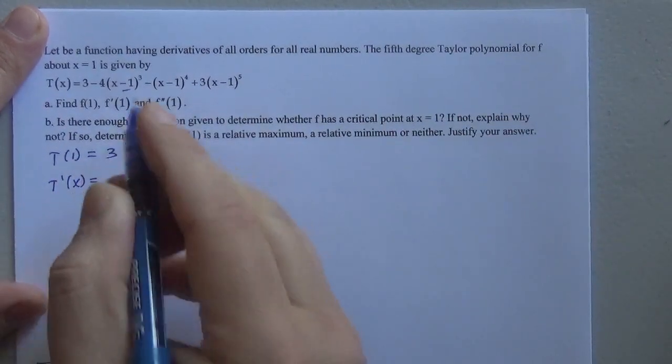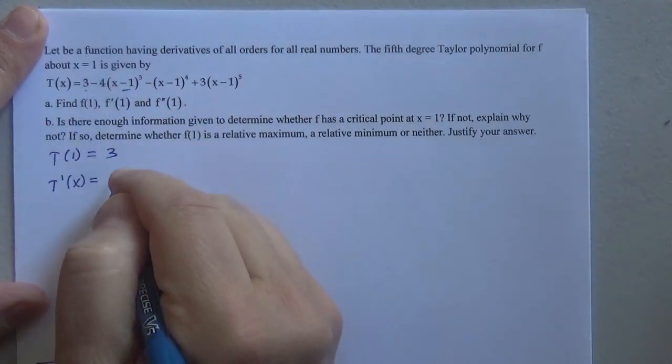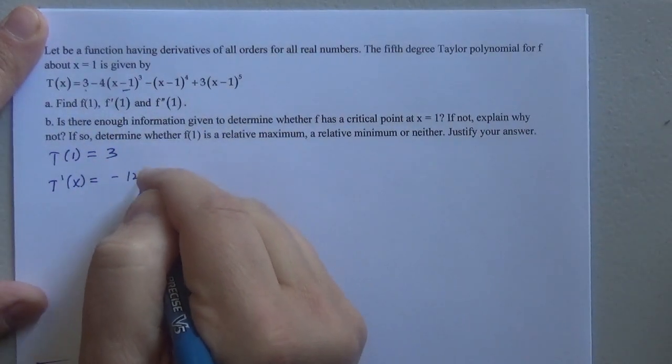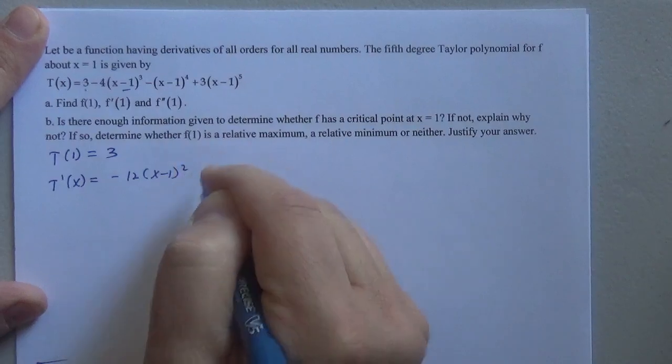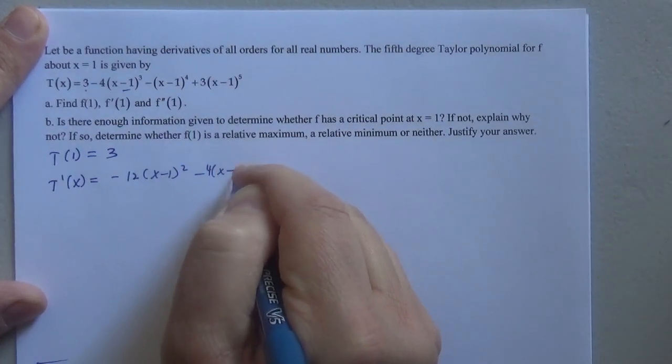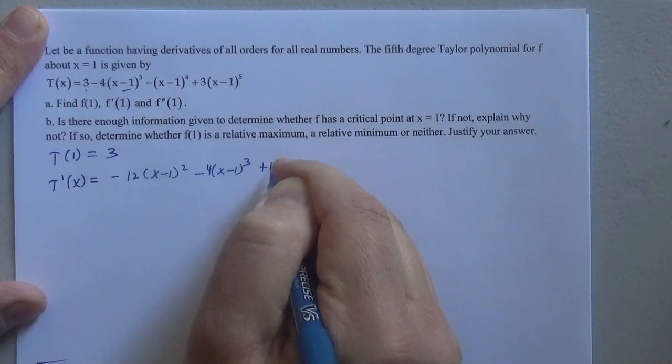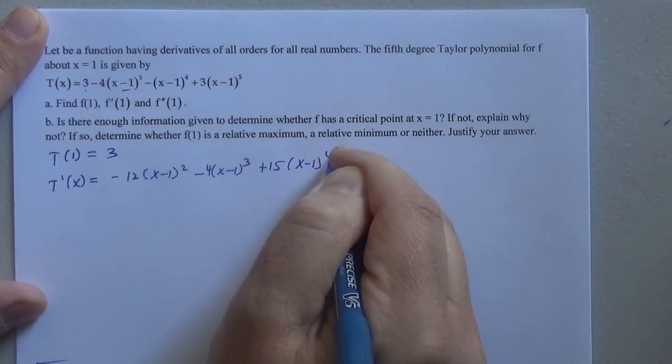Let's find t prime of x. The constant term will go away. This will be minus 12(x minus 1) squared minus 4(x minus 1) cubed plus 15(x minus 1) to the 4th.